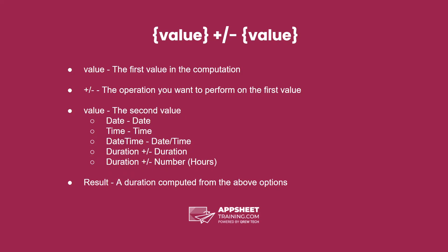The options are: date minus date, time minus time, date-time minus a date, date-time minus a time, or date-time minus a date-time, and duration plus or minus another duration, or a duration plus or minus a number, which represents hours. The result is a duration computed from the above options.